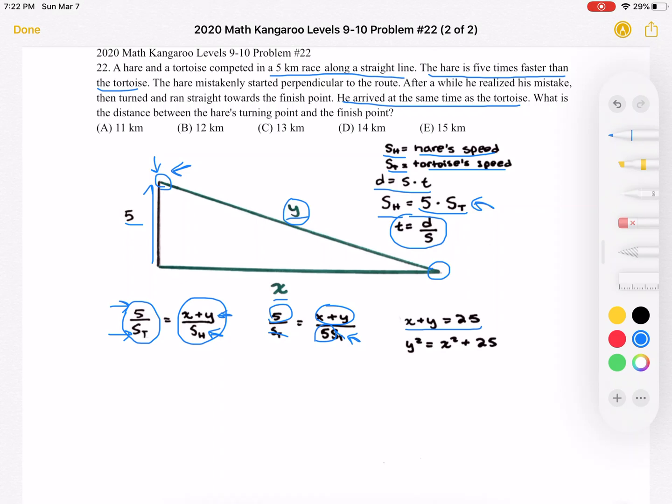And what do we also know, because this is a right triangle, we know that the hypotenuse squared, Y squared, must be equal to X squared plus 25, because of Pythagorean theorem. So now we have two equations, two variables, so we have enough to begin solving.